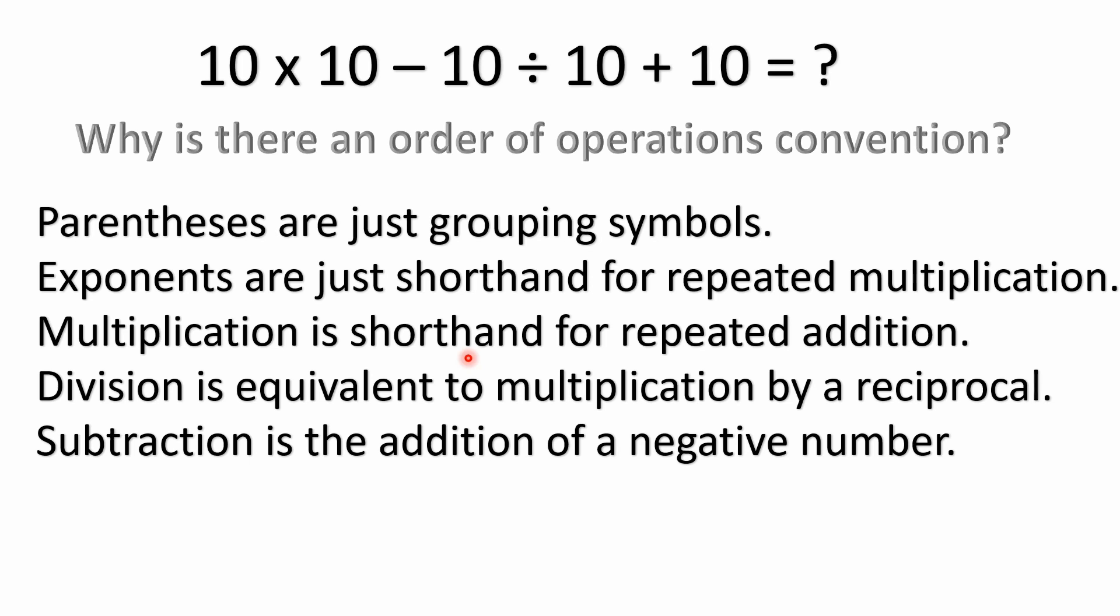And of course, multiplication and division have equal precedence because division is the same thing as multiplication. You're just multiplying by a reciprocal. And again, we said subtraction is the addition of a negative number. So addition and subtraction also have equal precedence. One is not solved before the other.